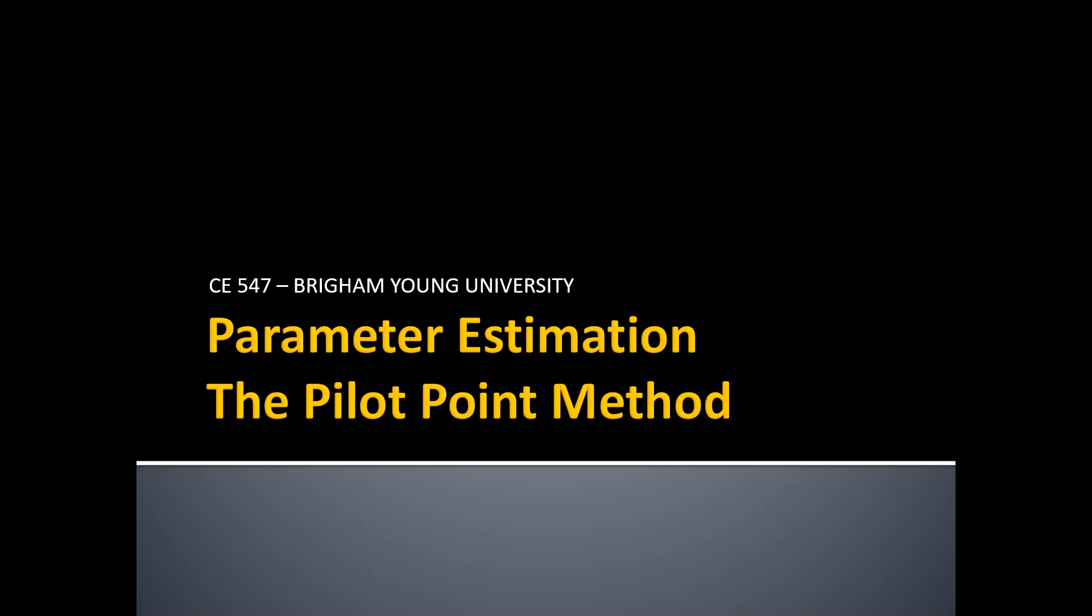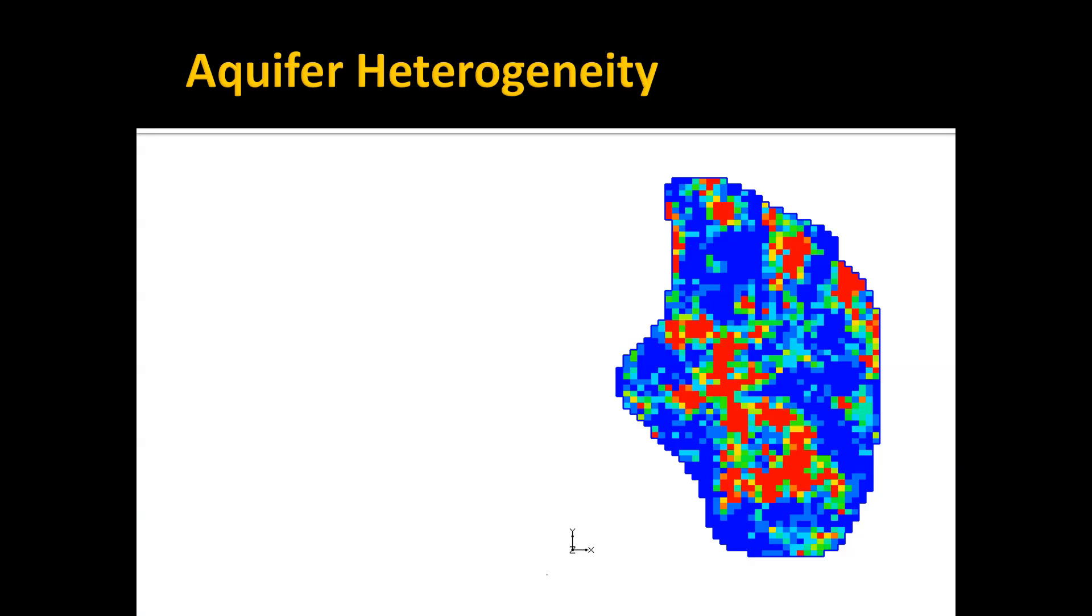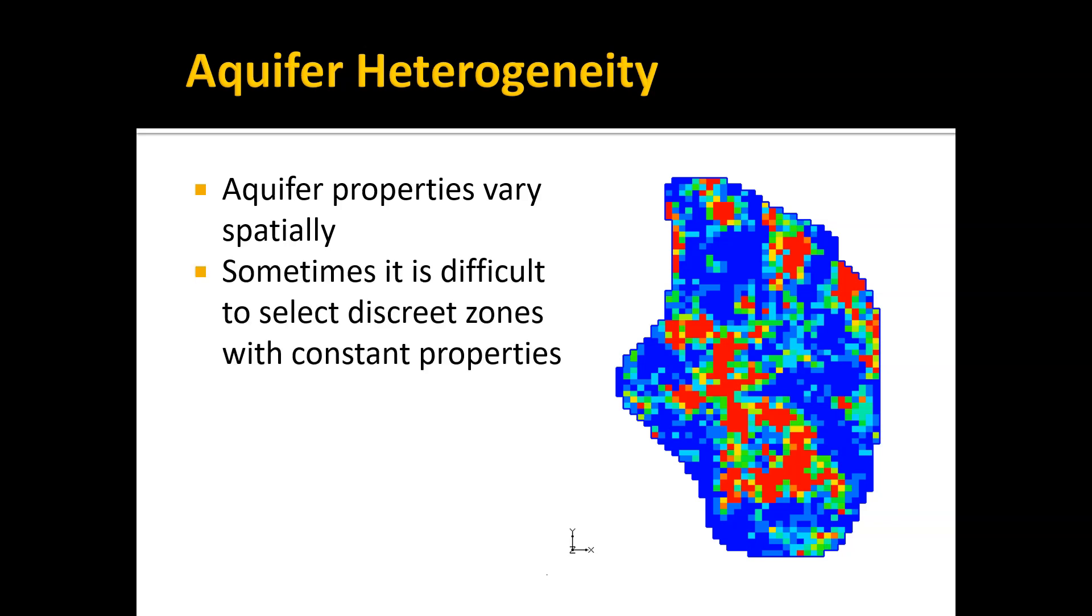Aquifers are heterogeneous and the aquifer properties vary spatially, often in a very complex fashion. If we take a complex aquifer like this without knowing much about how the properties are distributed, it can be challenging to come up with discrete polygonal zones that partition the aquifer into sections where we apply constant values of hydraulic conductivity, recharge, and so forth within these zones.